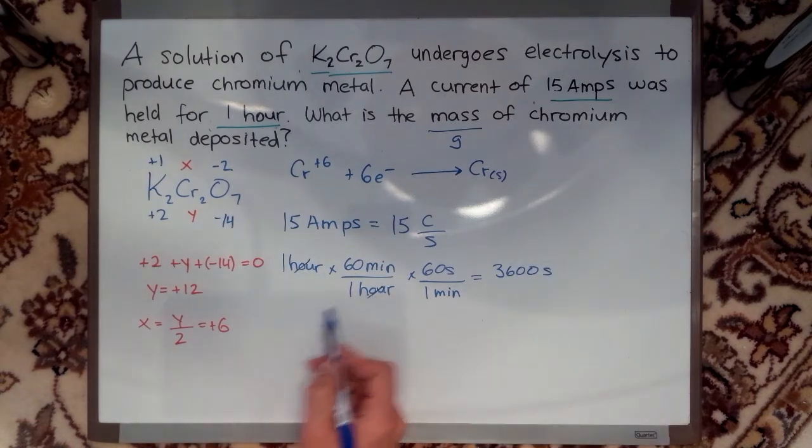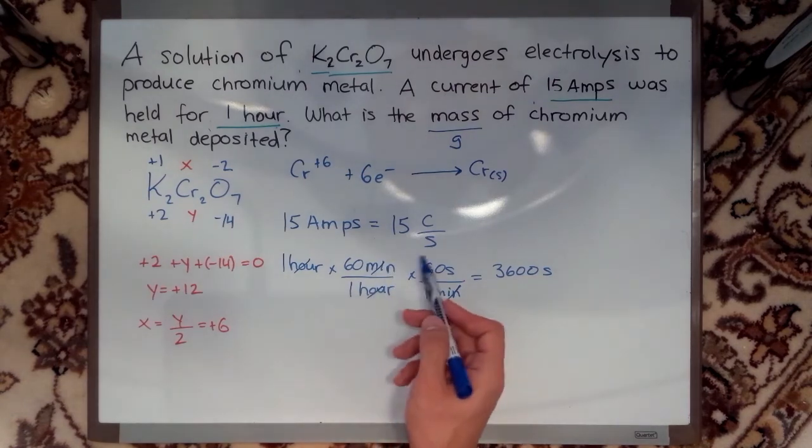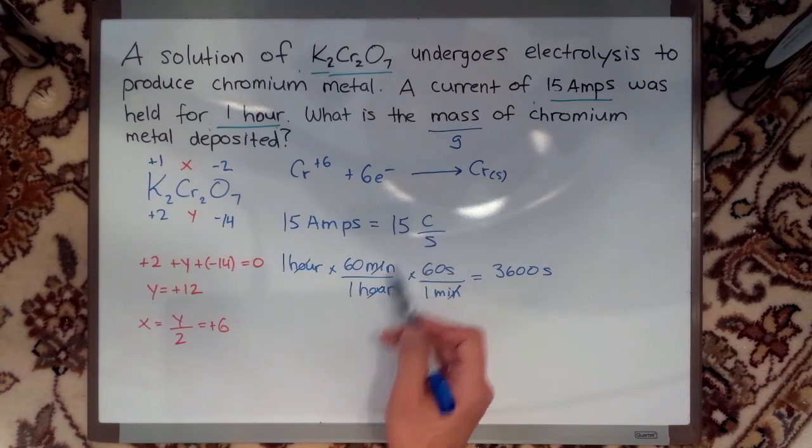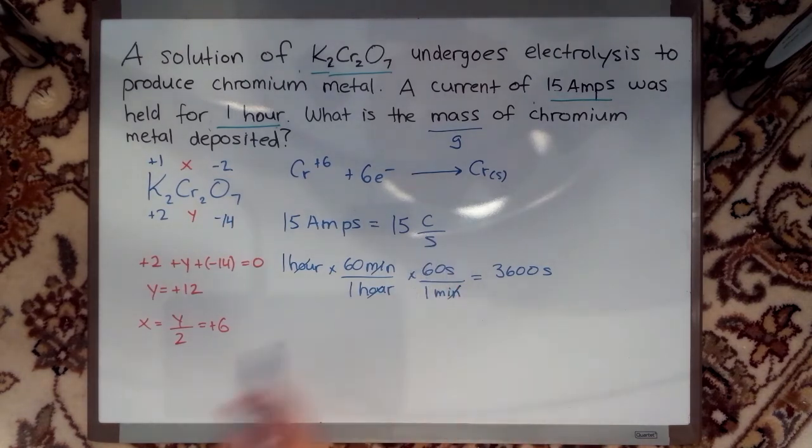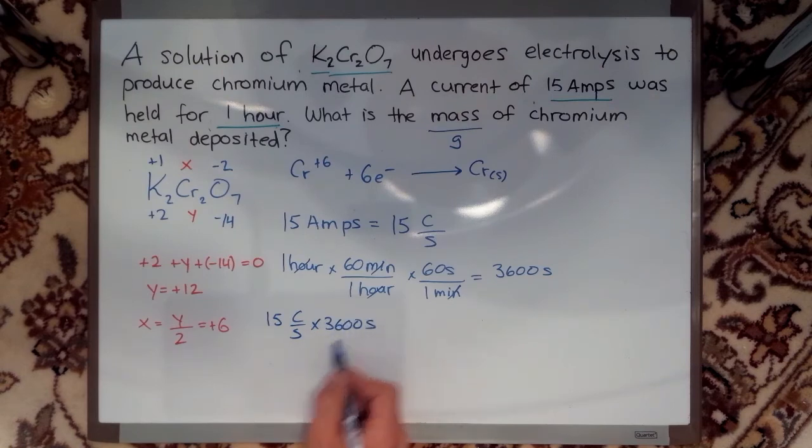As you see, I've canceled the hours, I've canceled the minutes, I'm up to the seconds. Well, how would I get rid of the seconds in this 15 coulombs per second equation? What if I just multiplied by the time? So now we'll say 15 coulombs per second times 3600 seconds, and that gets rid of my seconds.